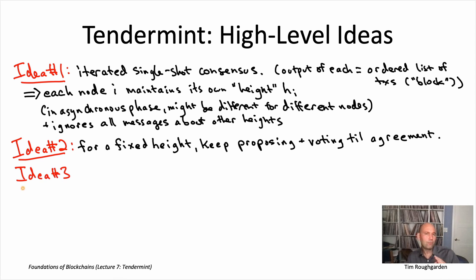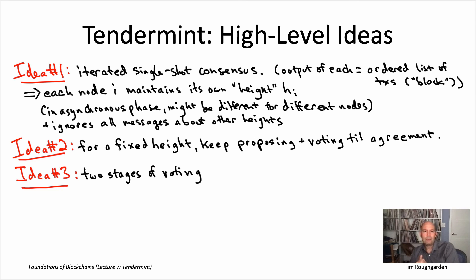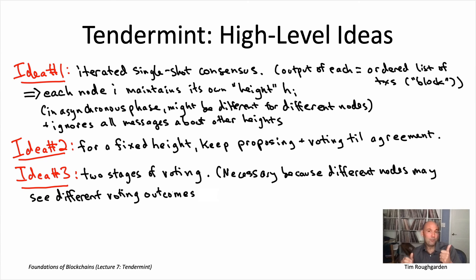The final idea — where the cleverness lies — is that nodes are going to vote on a proposed block, but we're going to have not just one round of voting but two stages of voting. Why might one stage not be enough? In a consensus protocol you take a vote and make a decision, but what's complicated is different nodes might see different outcomes of this vote. There are two forces that cause this: first, some nodes are Byzantine and might deliberately send inconsistent information — voting for block B1 to one set of nodes and for block B2 to another set, causing different honest nodes to have different vote counts.